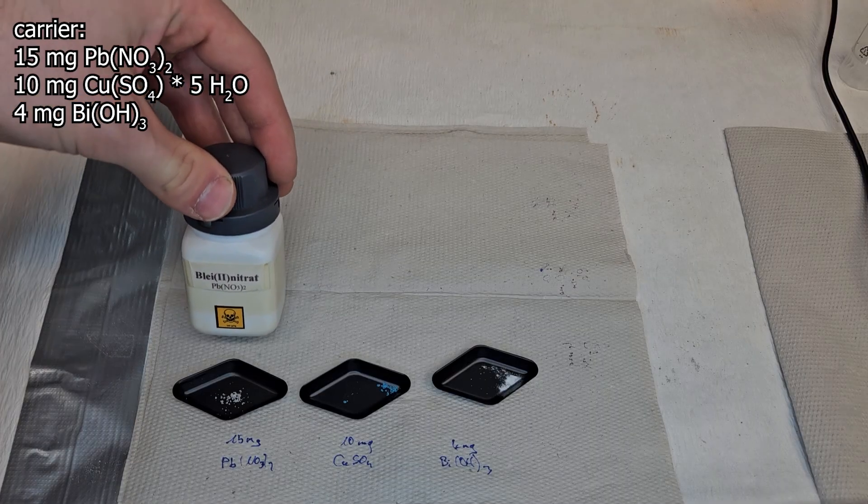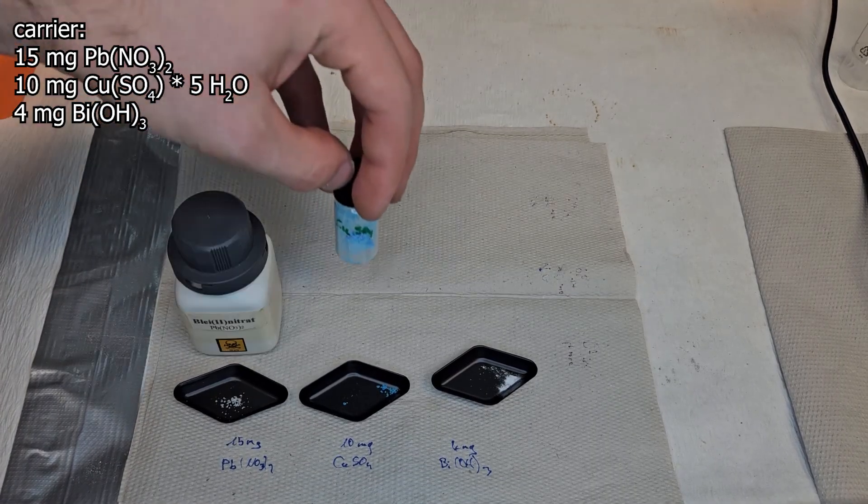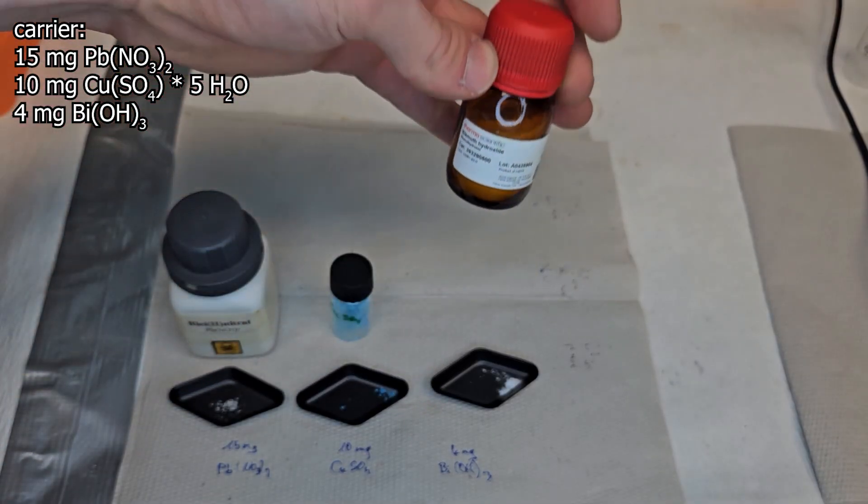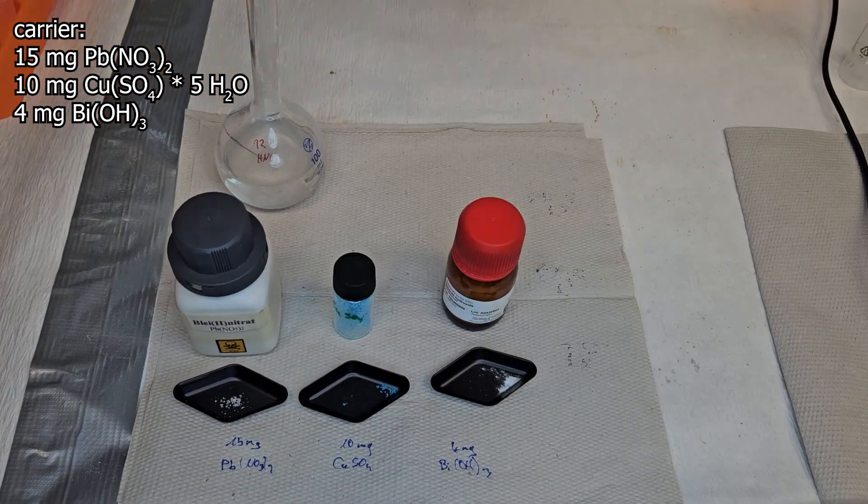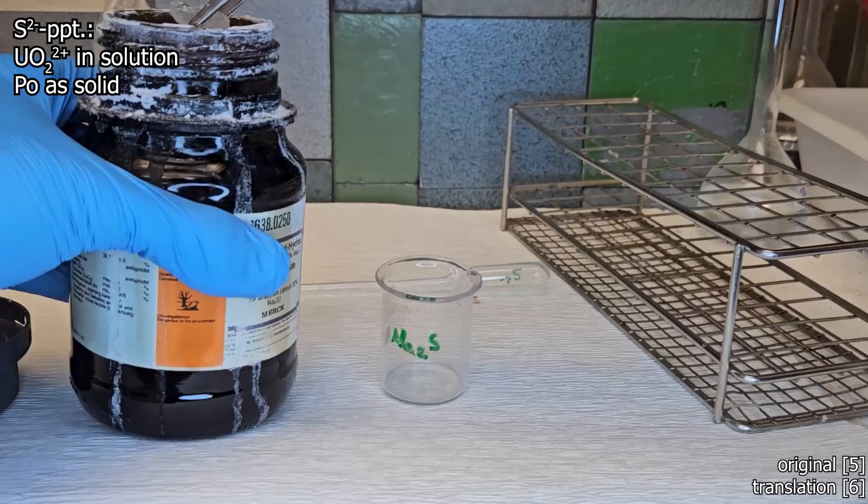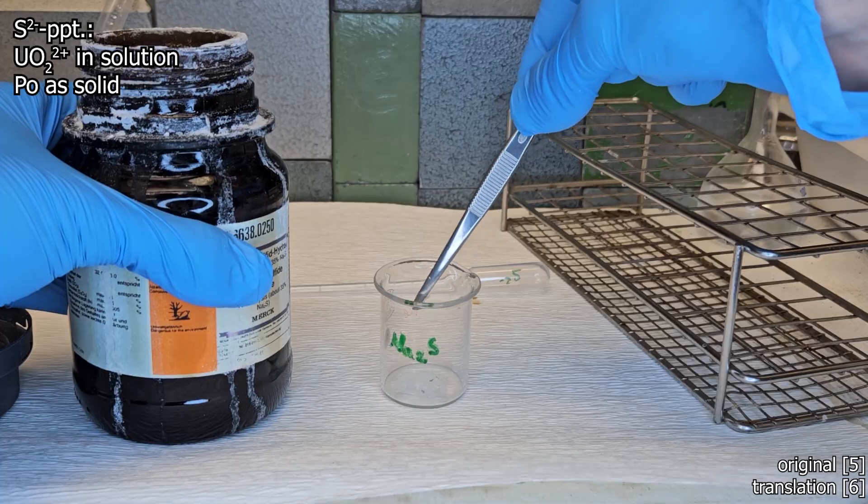The following carriers are now added to the solution for color effect: 15 milligrams of lead nitrate, 10 milligrams of copper sulfate, and 4 milligrams of bismuth hydroxide. The solution gradually turns slightly greenish due to copper. At that time, hydrogen sulfide was bubbled through.